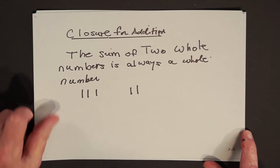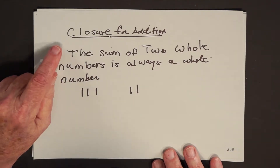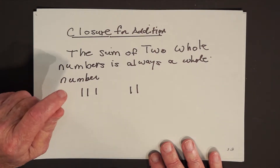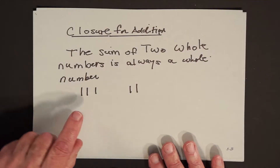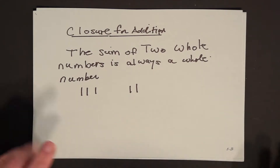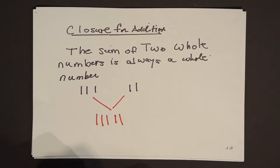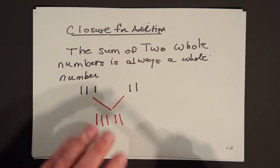So let's state the rules as they come up. The first rule is called the closure property for addition. It says the sum of two whole numbers is always a whole number. Now that may sound simplistic, like apples plus apples give you apples. But look at it in terms of tally marks — if I have a bunch of tally marks scattered all around, I can squeeze them all together to form one bigger group. That's all the closure property says in terms of tally marks.